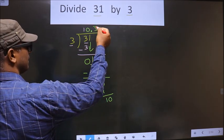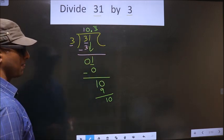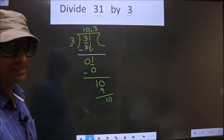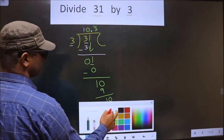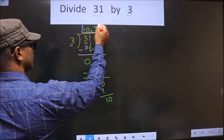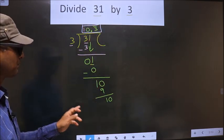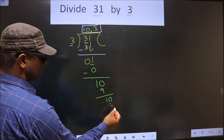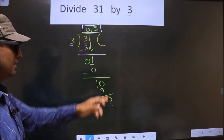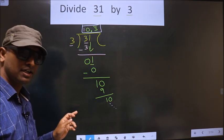So here we get 10.3 bar. Clear with a mistake. So this is our quotient. And this goes on. Am I clear?